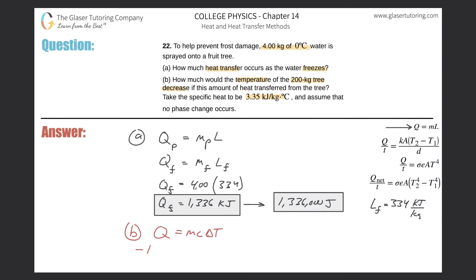So 1,336 will be equal to the mass, so that's 200 kilograms, the specific heat they told us was 3.35, and then the change in temperature is what we are after. So simply multiply these two together, then divide it out. You know how to do the math here.